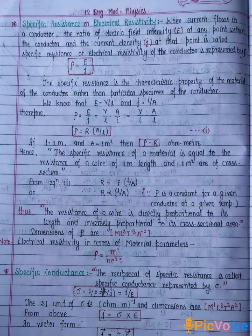The SI unit of sigma is ohm meter inverse and the dimensions are M⁻¹L⁻³T³A².